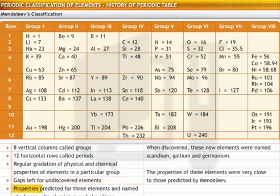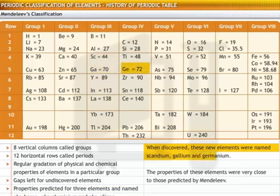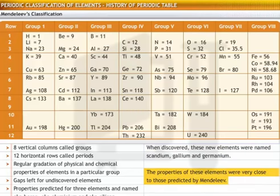The table helped predict the properties of three elements. These elements were named Eka-Boron, Eka-Aluminium, and Eka-Silicon. When these elements were discovered, they were named Scandium, Gallium, and Germanium. The properties of these elements were very close to those predicted by Mendeleev.